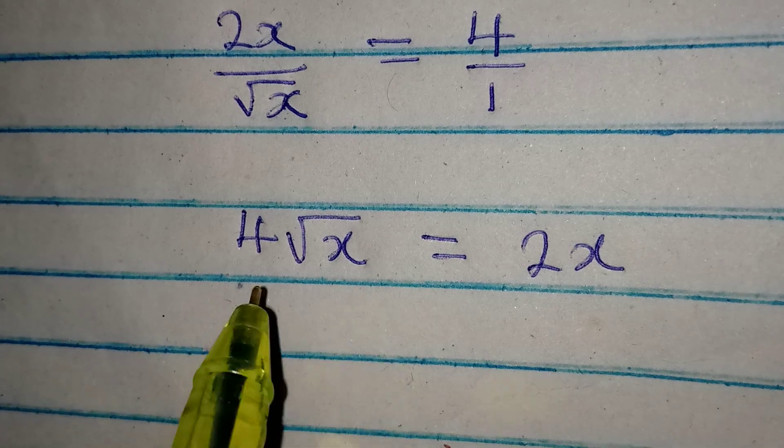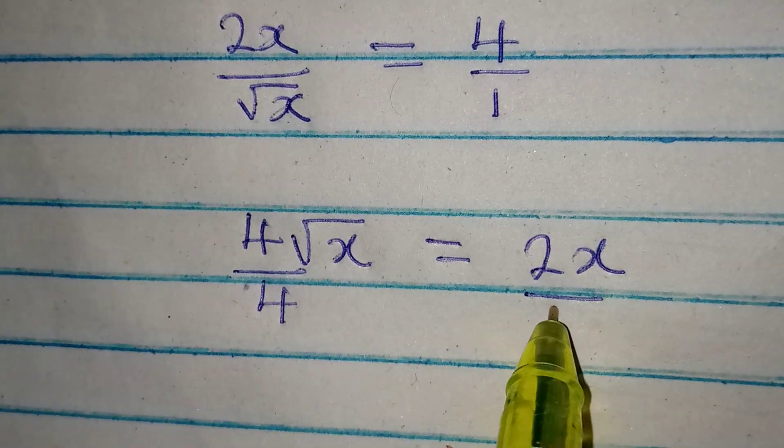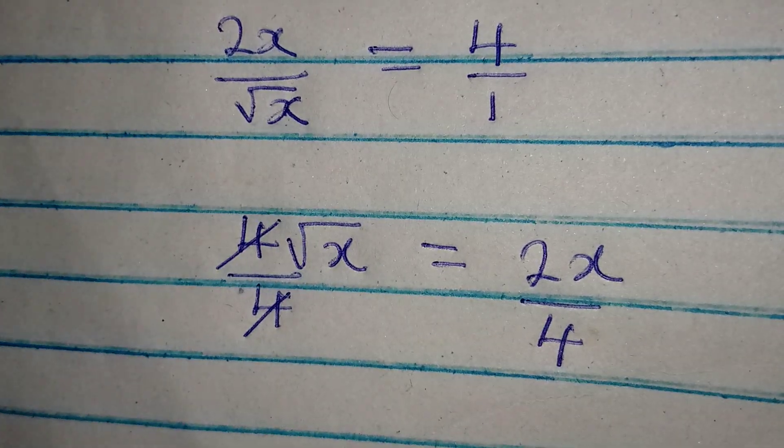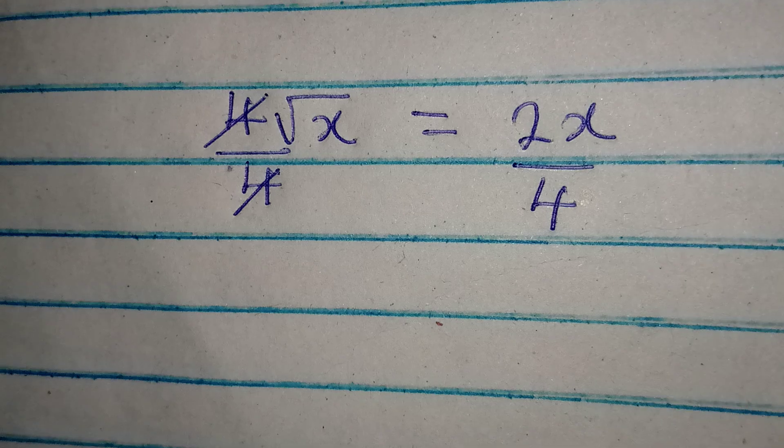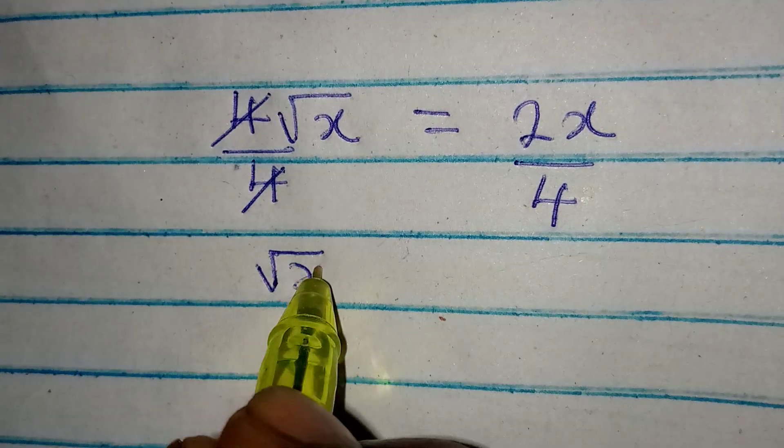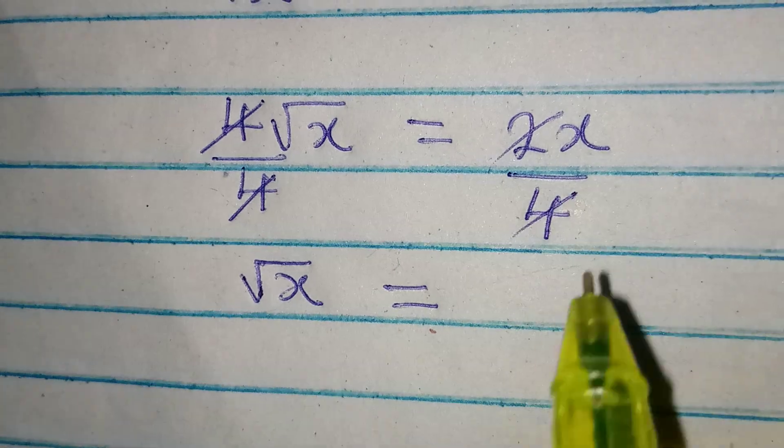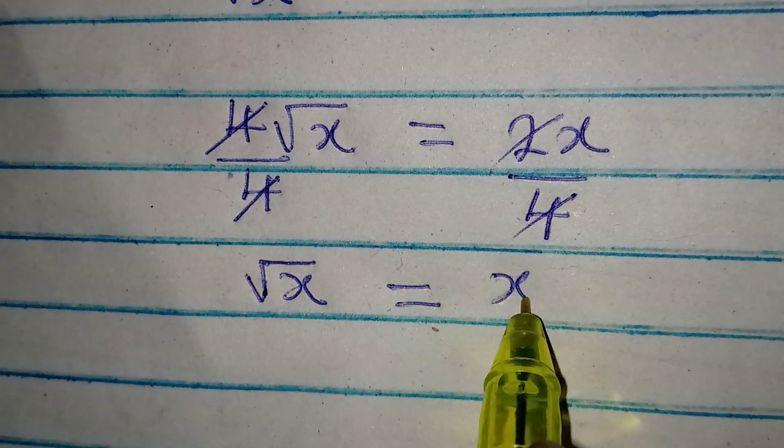Divide by 4 so that this will go with this. If that happens, square root of x will be equal to x over 2.